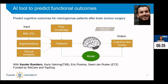Another project is to develop an AI system to predict cognitive outcomes for meningioma patients after brain surgery. This is mainly the work of Sander, a PhD student at Tilburg and ETZ. Meningiomas are a type of brain tumour. We are using MRI data combined with cognitive test performance and clinical information from patients who underwent tumour resection. Our AI system will segment the tumours from MRI images and combine that with patient data to predict cognitive outcomes after surgery — supporting decisions about whether a patient should undergo surgery or not.